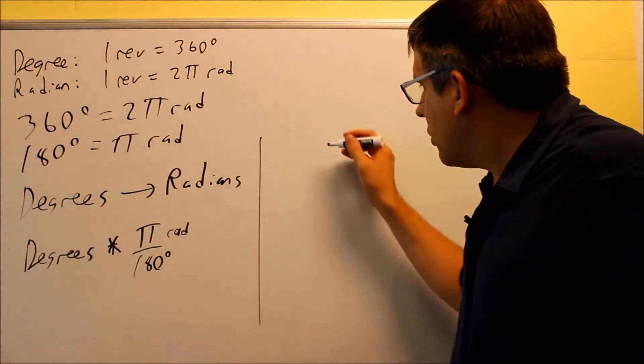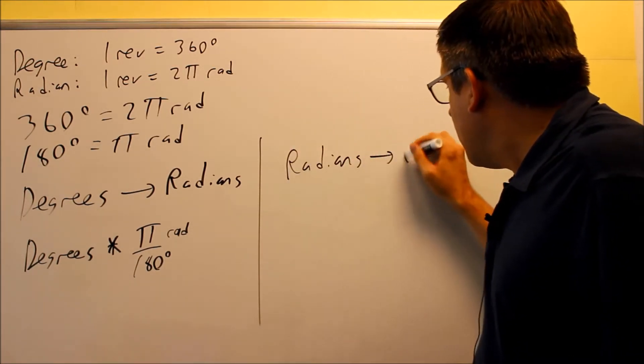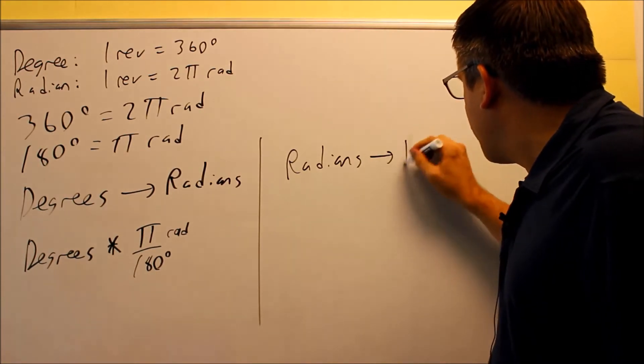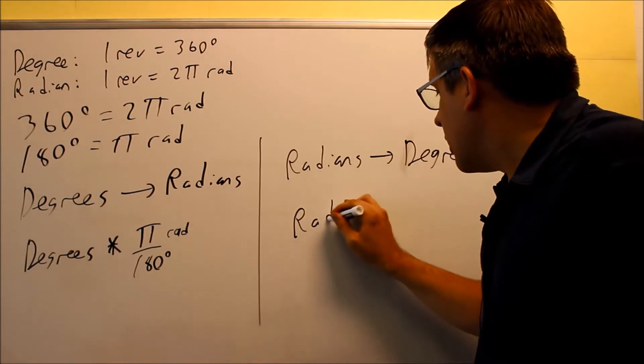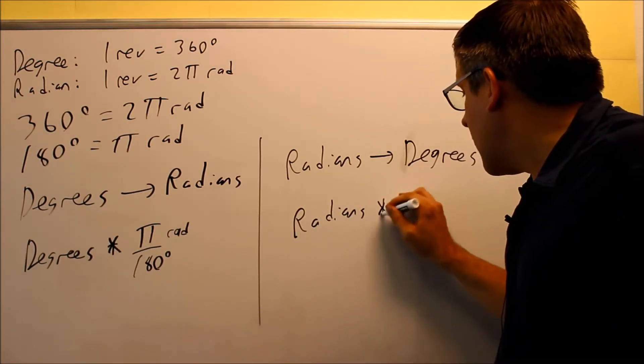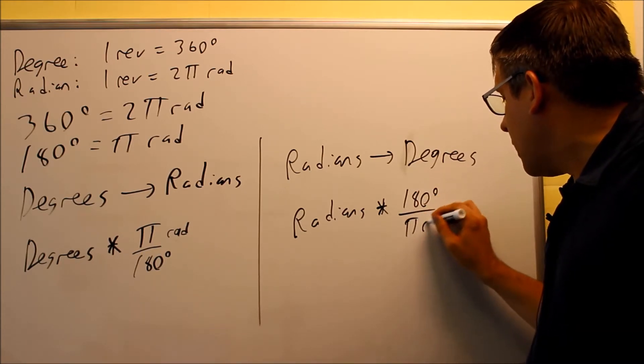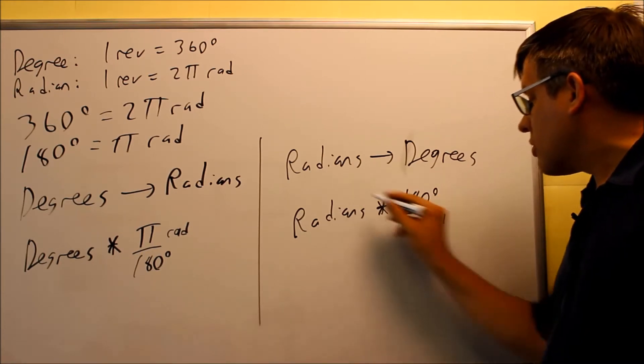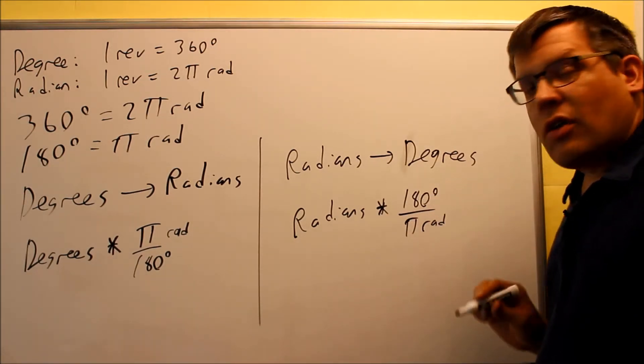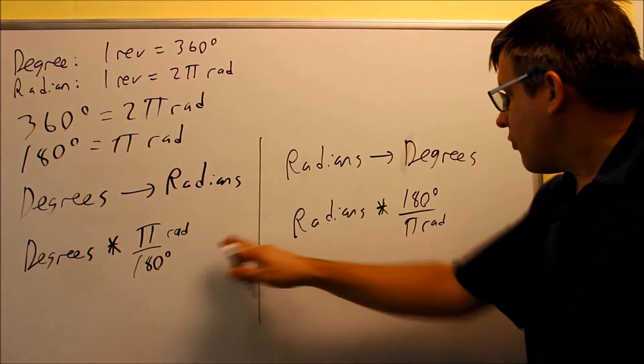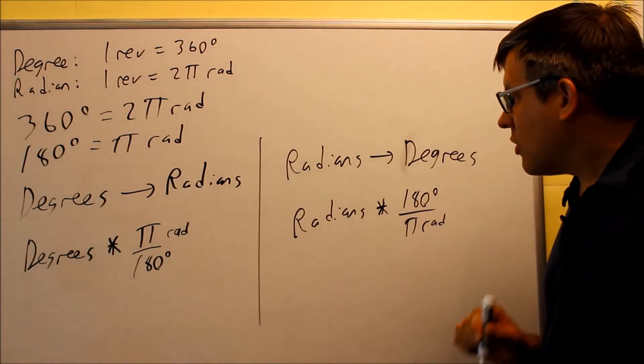Now, I also want to come up with another formula going from radians into degrees. So if I go from radians to degrees, I'll start with radians here, and then I'm going to multiply it by 180 degrees over π radians. I want the radians to cancel out here, and if that cancels out, then I'll have degrees left over as my measurement. So these are the two formulas that we're going to use going back and forth between degrees to radians and radians to degrees.